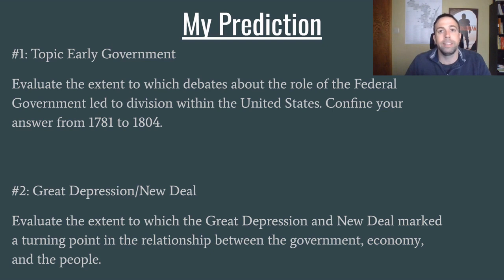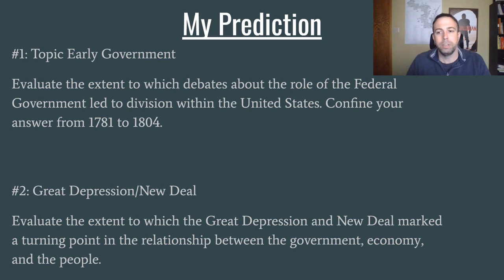My next guess is another topic that we've barely seen much on the DBQs and in AP tests in general in the last several years, and that is the Great Depression and New Deal. Here's a possible shot-in-the-dark prompt: evaluate the extent to which the Great Depression and New Deal marked a turning point in the relationship between the government, economy, and the people. Again, these are just guesses. I have no idea what might be on the AP test, but I just wanted to give my prediction. Alright, have a good one.